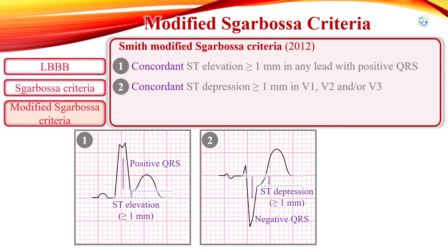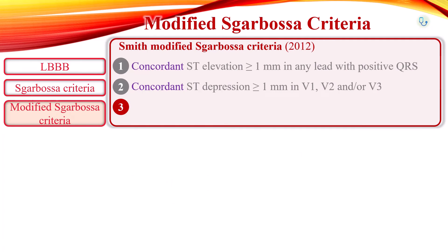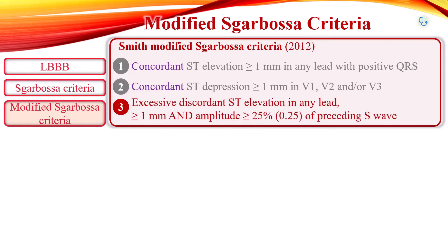The significant change is the modification of the rule for excessive discordance. The use of a 5 mm cutoff for excessive discordance was non-specific. The third criterion is revised: excessive discordant ST elevation in any lead of at least 1 mm that has an amplitude at least 25% the depth of the preceding S wave. To measure the ST-to-S ratio, measure the amplitude of the R or S wave — whichever is most prominent — and the ST segment. The ratio of ST to S is calculated for each lead with a discordant ST deviation of at least 1 mm.